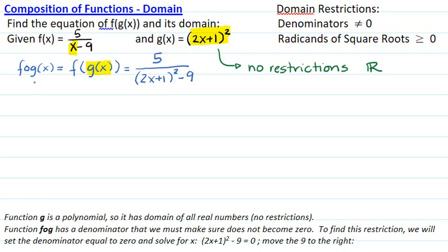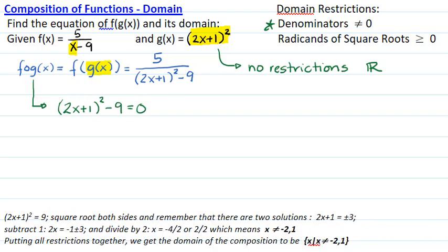The composite function has only a denominator, so I'm going to make sure that the denominator is not equal to 0. To do that, I'm going to take the denominator, set it equal to 0, and then solve for x. I will do that by moving 9 to the right, which gives me (2x+1)² = 9, and then taking square roots of both sides. I have to remember that every time I do that I will have two solutions, a positive or a negative.